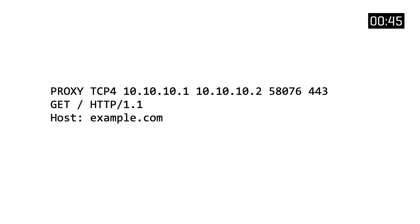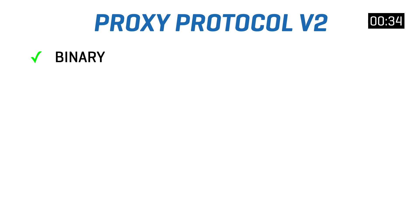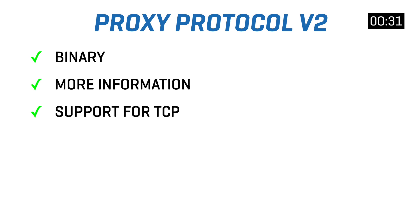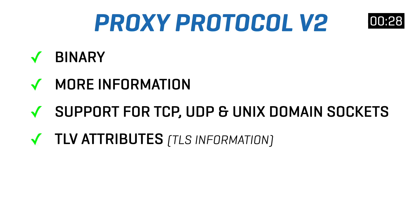There are two versions of the proxy protocol. Version 1 is a clear text protocol that adds the header containing protocol information, source and destination IP, and source and destination port. Version 2 is in a binary format, is more compact and can contain more data. It supports TCP, UDP and UNIX domain sockets, and also contains TLV attributes which contain information about potential TLS connections.